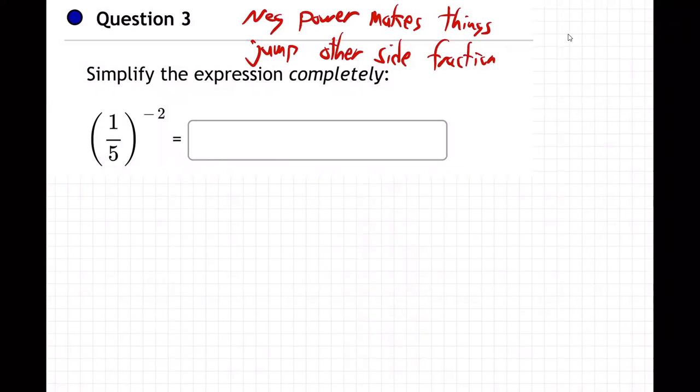Okay, so basically, and one other thing about powers - you can just take this power and apply it to both parts, so it'll become 1 to the minus 2 over 5 to the minus 2. So it's on both of them.